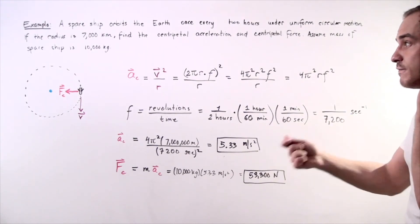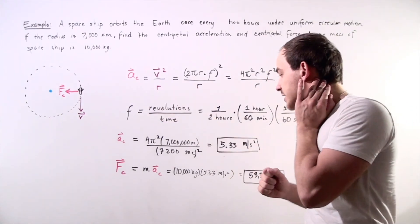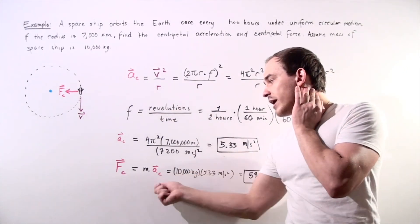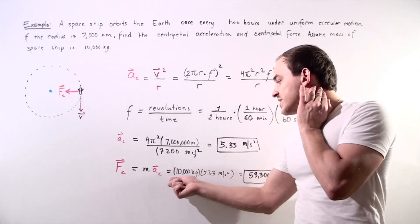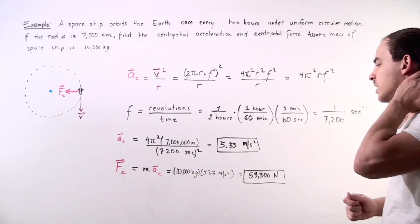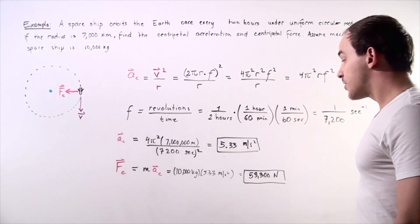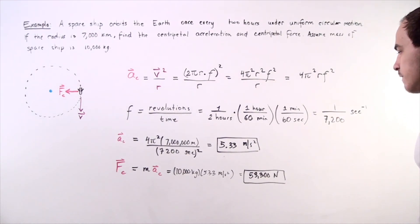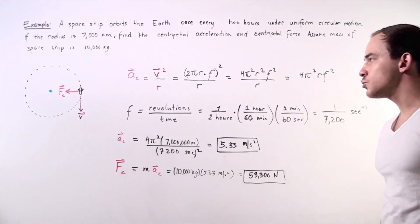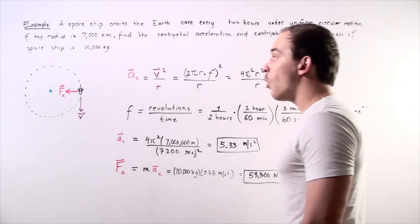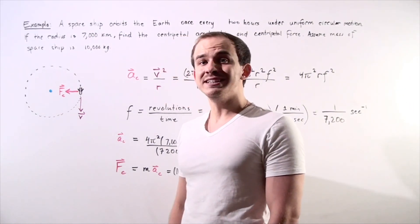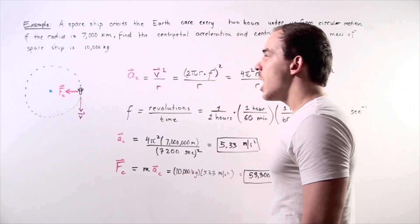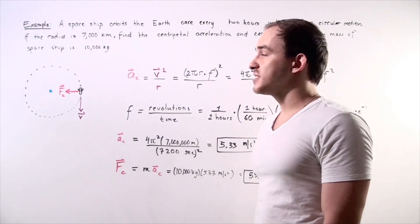To find the force, the net force acting on our object, we simply use our equation M times A. So 10,000 kilograms multiplied by 5.33 meters per second squared, and we find a force of 53,300 newtons. And the force points in a direction that is perpendicular to the motion of our object, of our spaceship.